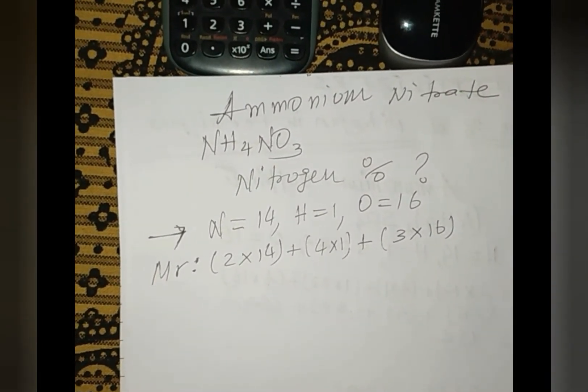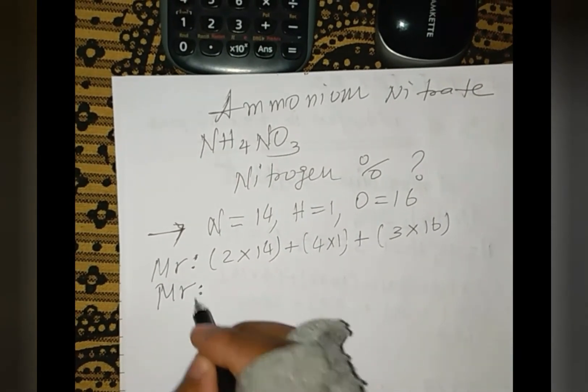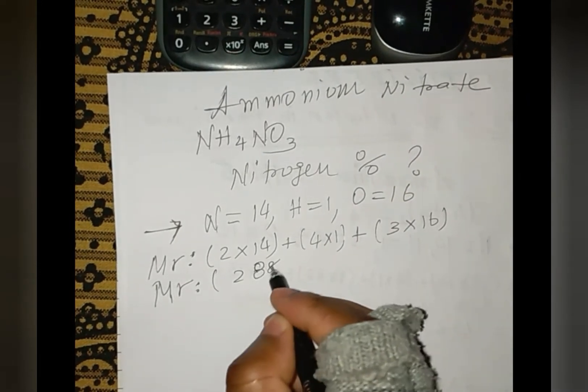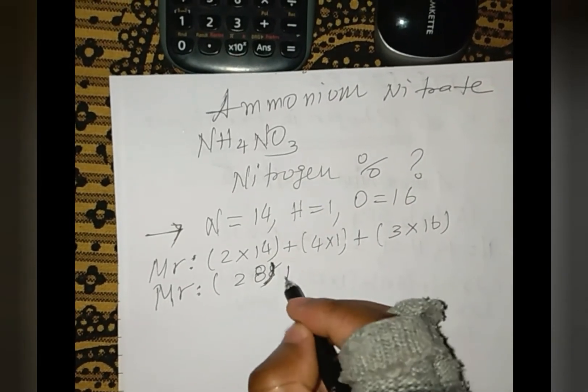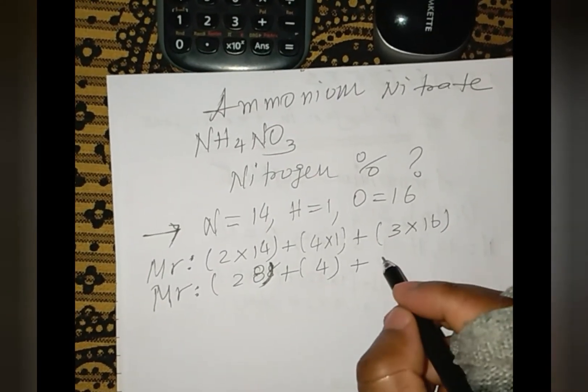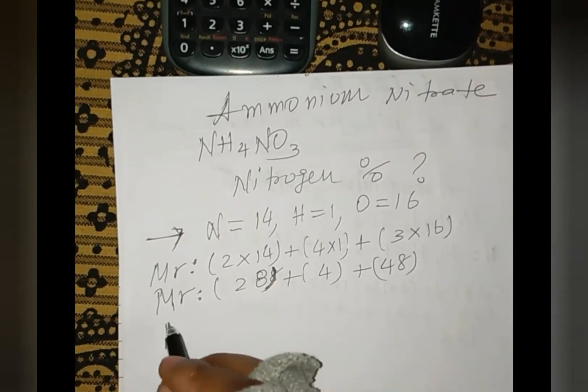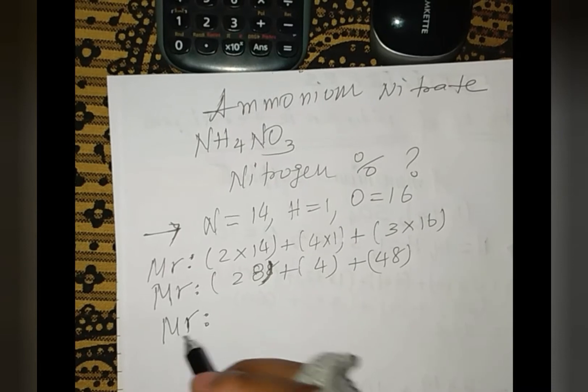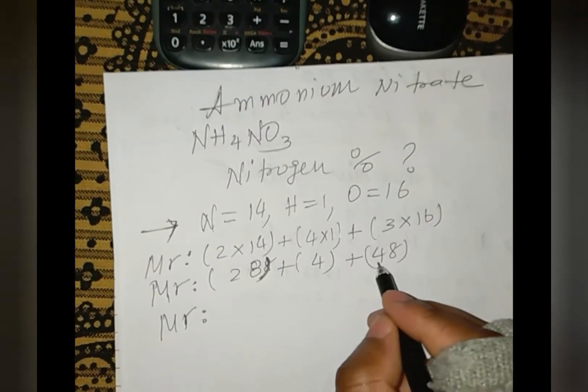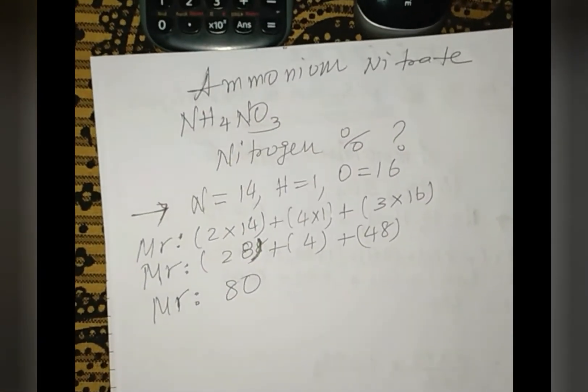Two times 14 equals 28, plus four times one equals 4, plus three times 16 equals 48. If we sum up all these values, 28 plus 4 plus 48, this equals 80. So the molecular mass is 80.